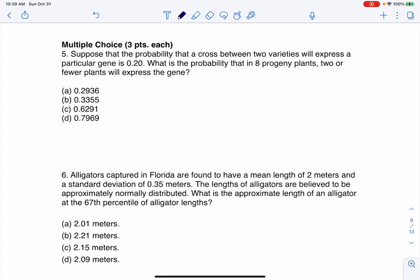Hey everyone, let's take a look at our first multiple choice. Suppose that the probability that a cross between two varieties will express a particular gene is 20%. What is the probability that in eight progeny plants, two or fewer plants will express the gene?